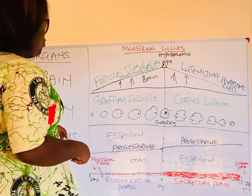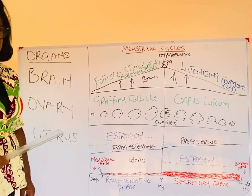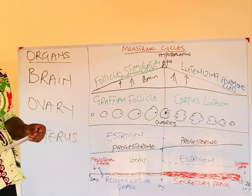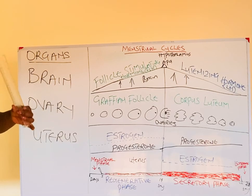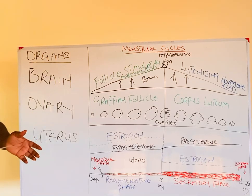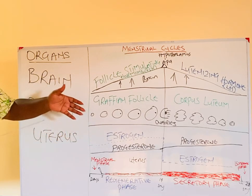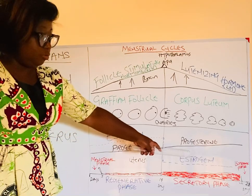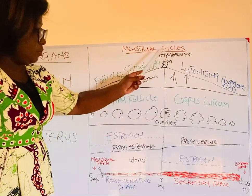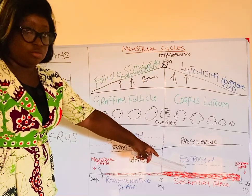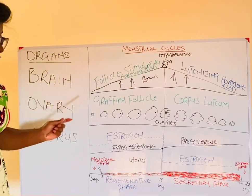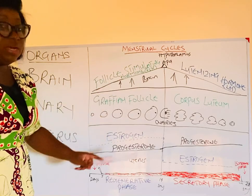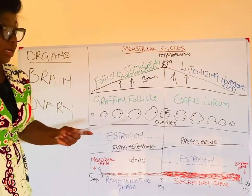Going into the menstrual cycle, we'll first talk about the three main organs that make the menstrual cycle happen: the brain, the ovary, and the uterus. It is worth knowing that the menstrual cycle is controlled by a neural-hormonal process. When certain hormones drop — for instance, when estrogen drops — signals are sent back to the brain to release follicle stimulating hormone to start a new cycle.